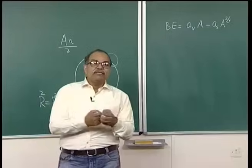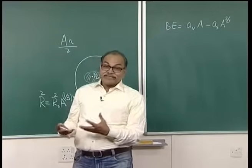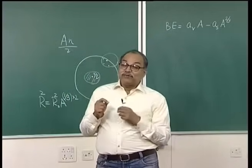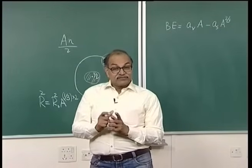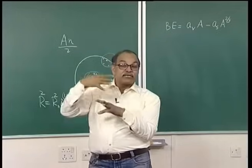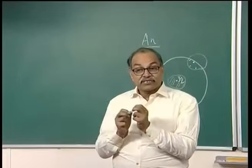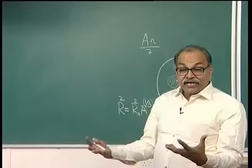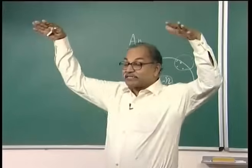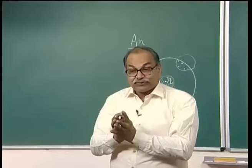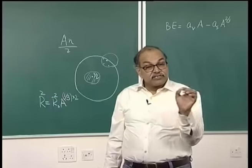In the nucleus, protons interact through Coulomb forces as well as nuclear forces, and this also contributes to binding energy. However, it is not attraction — proton-proton Coulomb interaction is repulsion. Repulsion means a loss of binding energy: the total mass energy increases and binding energy is reduced. So there is a further reduction in binding energy because of this Coulomb interaction.